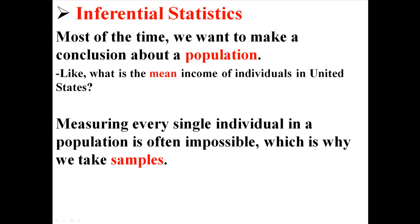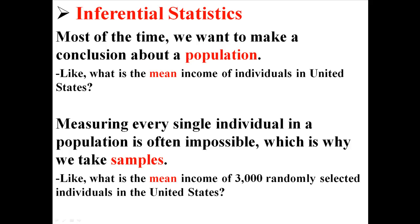Measuring every single individual in a population is often impossible, which is why we take samples — like what is the mean income of 3,000 randomly selected individuals in the United States. The population mean is a parameter, while the sample mean is a statistic. In inferential statistics, we seek to use statistics to estimate the value of parameters that would otherwise be difficult or impossible for us to obtain.